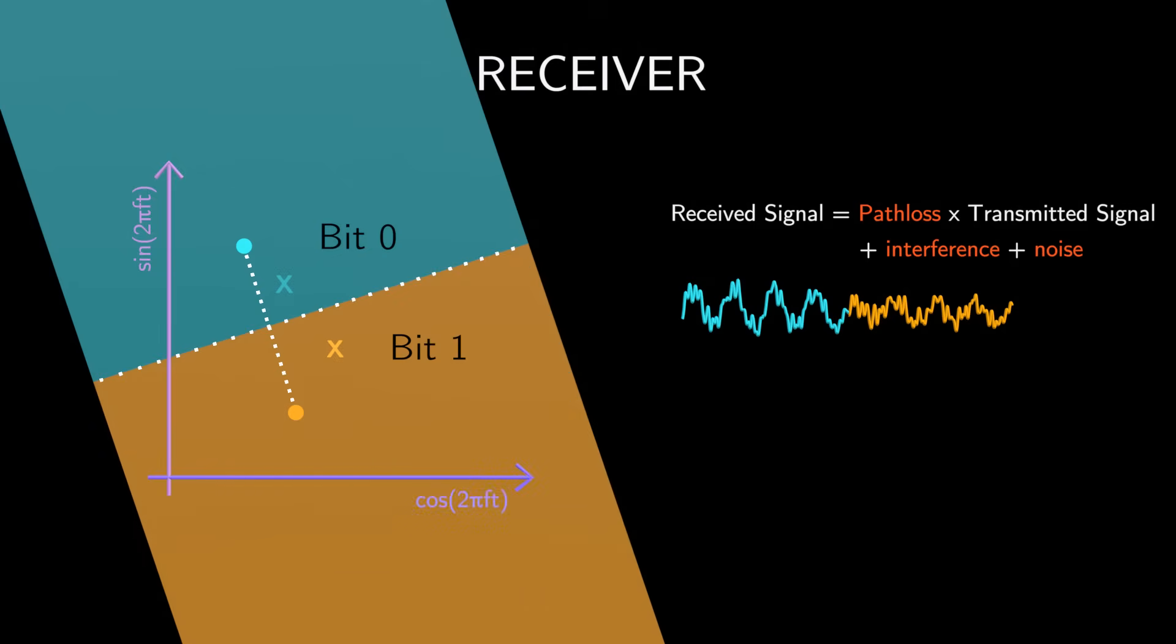If the received point falls within the bit 0 region, the receiver decodes it as bit 0. Otherwise, it's decoded as bit 1. If the transmitted constellation points are close to each other, then there is a high probability of error while decoding.